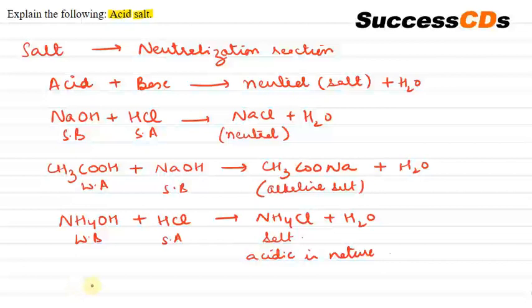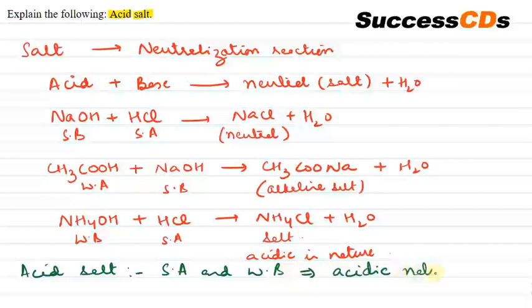So I think we got it. Just to sum up to make this clear: Acid salt is a salt which is formed from a strong acid and weak base and as a result, it possesses acidic nature. That's all the explanation to the question. Thank you.